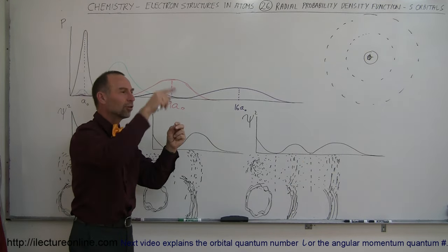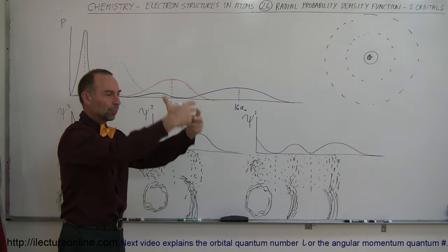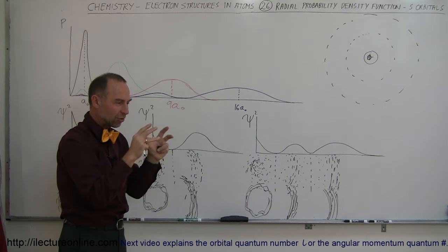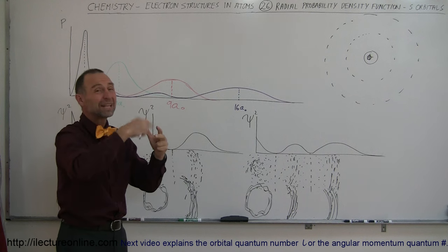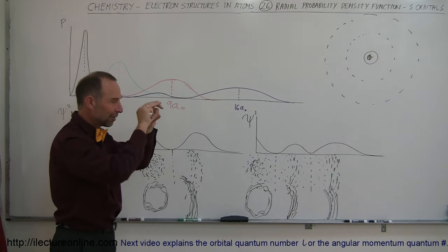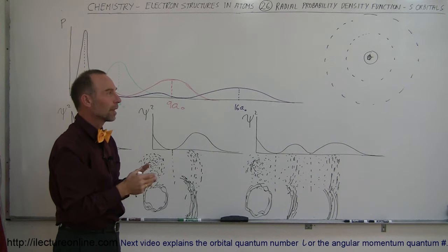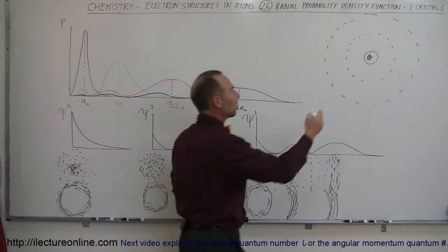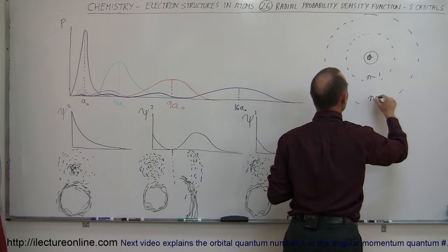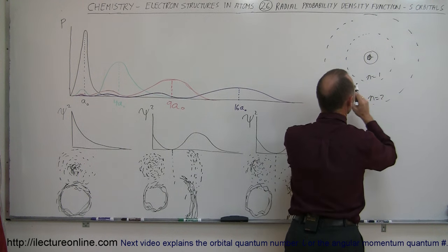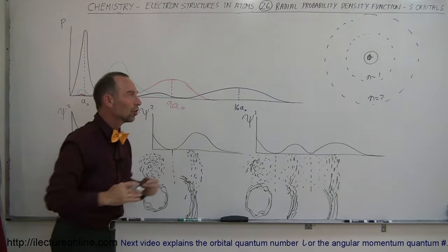The electron goes around the nucleus in various ways, and typically the location where the electron will reside, as it goes around many trillions of times per second, forms a spherical shell around the nucleus. When it jumps up to the next energy level — say from the n=1 energy level to the n=2 energy level — it goes to a larger spherical shape.